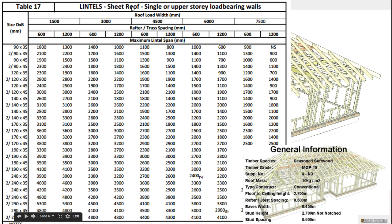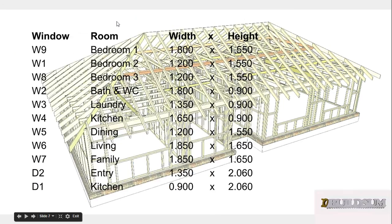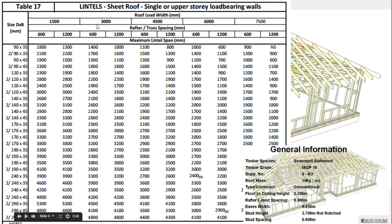Here's Table 17. You need to know the roof load width — ours was 1800, so we're going to use the 3-metre column. Rafter/truss spacing is 600, so I'm going to use the 600 column. Then we need to know the maximum span of our lintel, so we need to go back to our door and window schedule to find that maximum width.